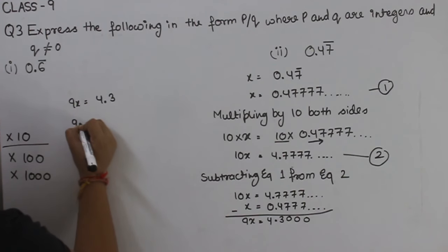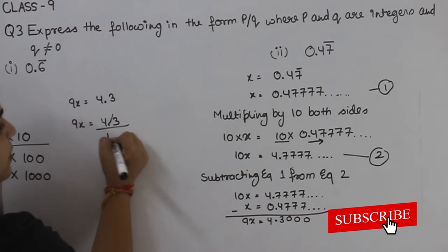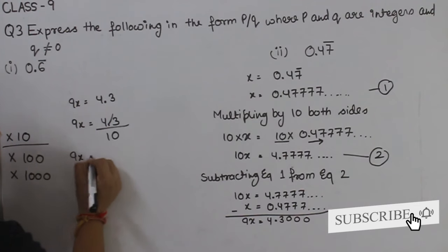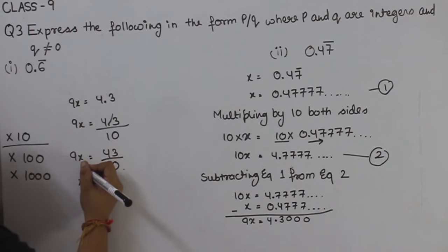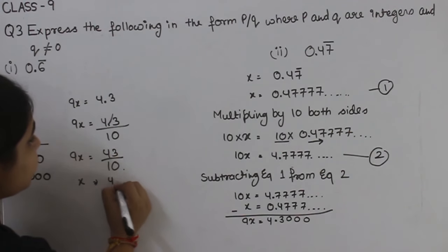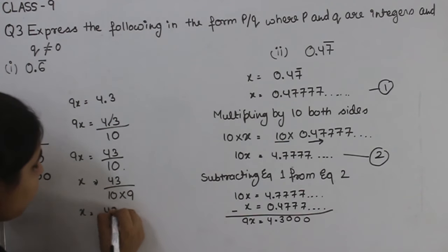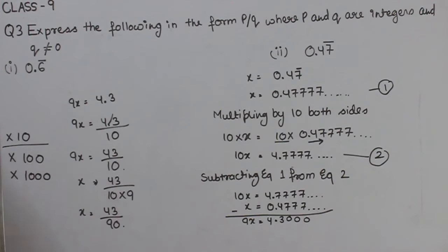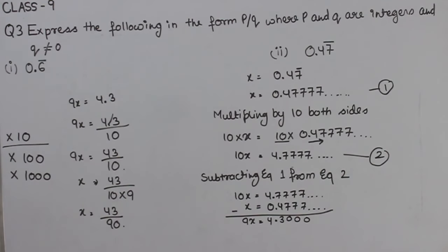So 9x is equal to 4.3. We can write 4.3 as 43 by 10, so x is equal to 43 by 90. This is the P by Q form of 0.47 with a bar on 7, and is the solution of part 2.